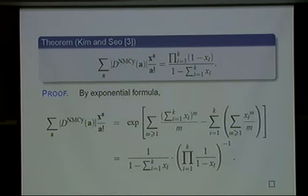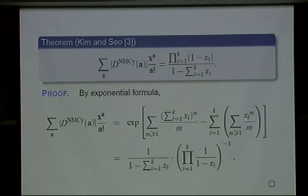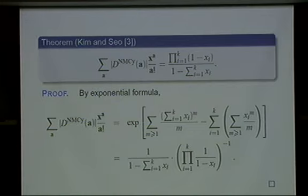We first proved it in an inductive way, getting some kind of sign inversion. But after some consideration, we realized it's very easy to understand by exponential formula. Here is the colored permutation such that there are no monochromatic cycles. This part represents cycles which can have arbitrary numbers — okay. And in here, we should subtract the monochromatic cycles. So a cycle has only the i-th color, and it might have from 1 to k colors. If we subtract them, then the deck only has non-monochromatic cycles. If we plug in these things, we obtain this formula.